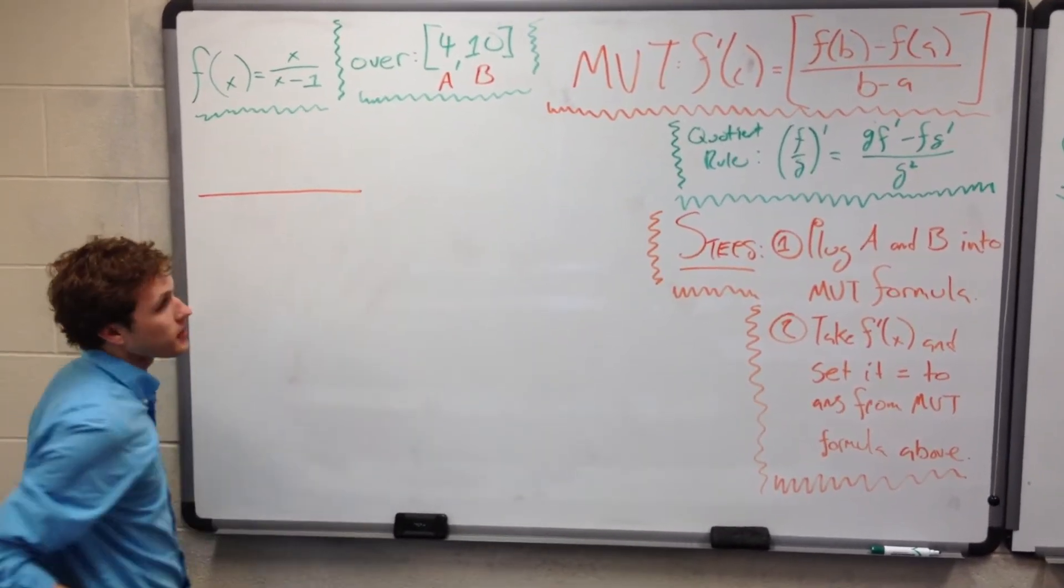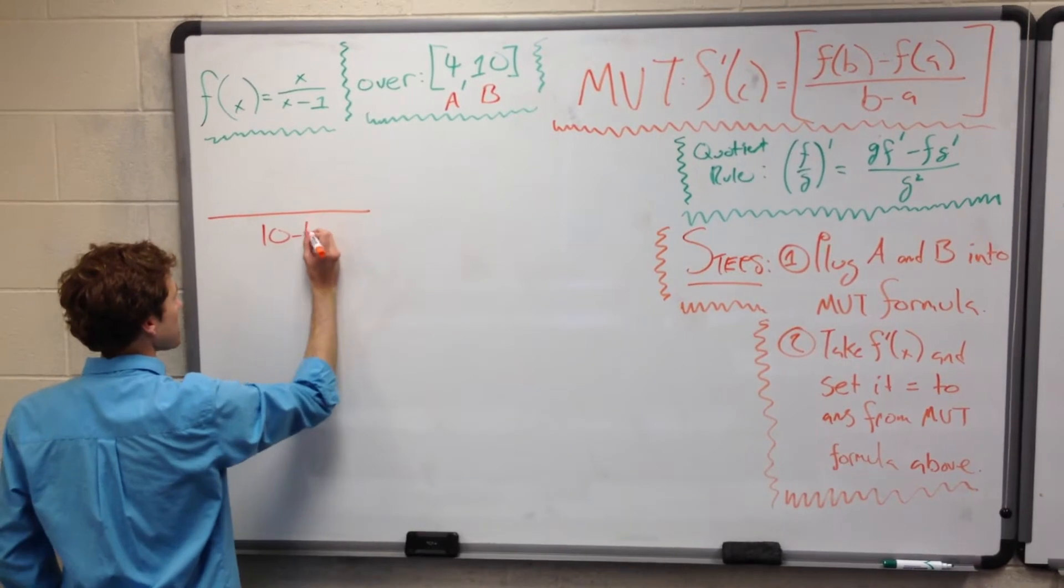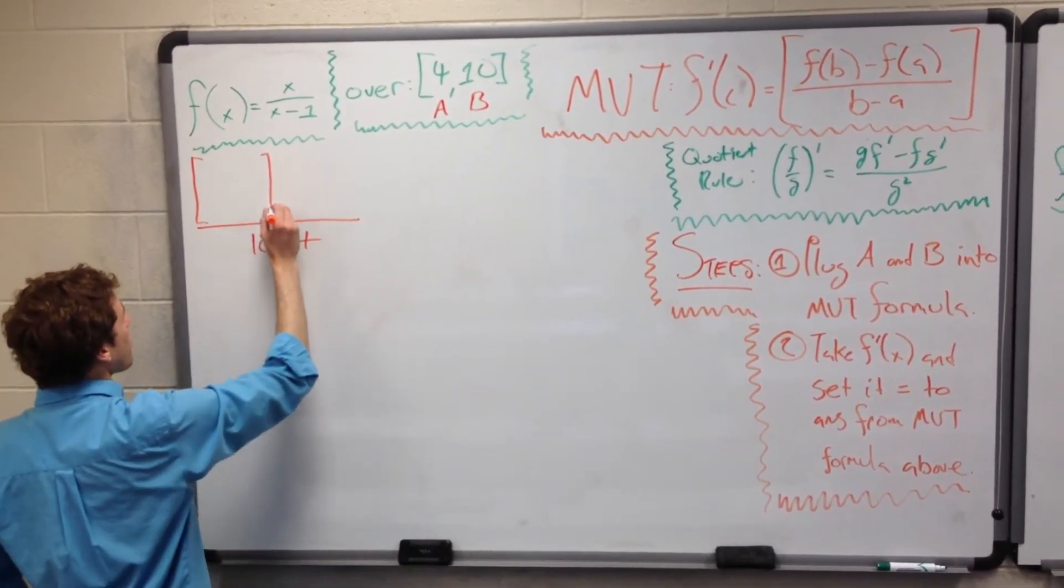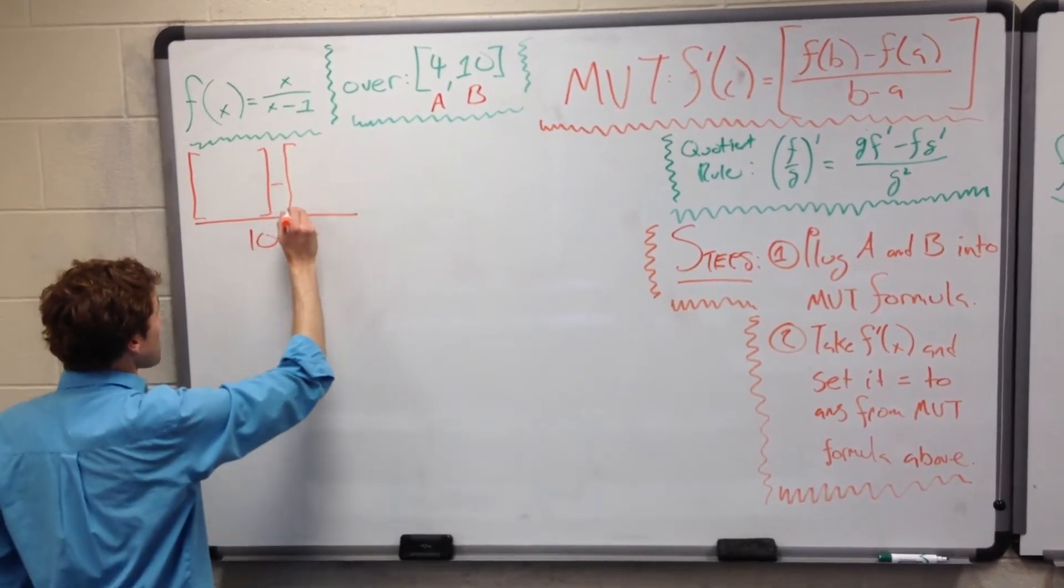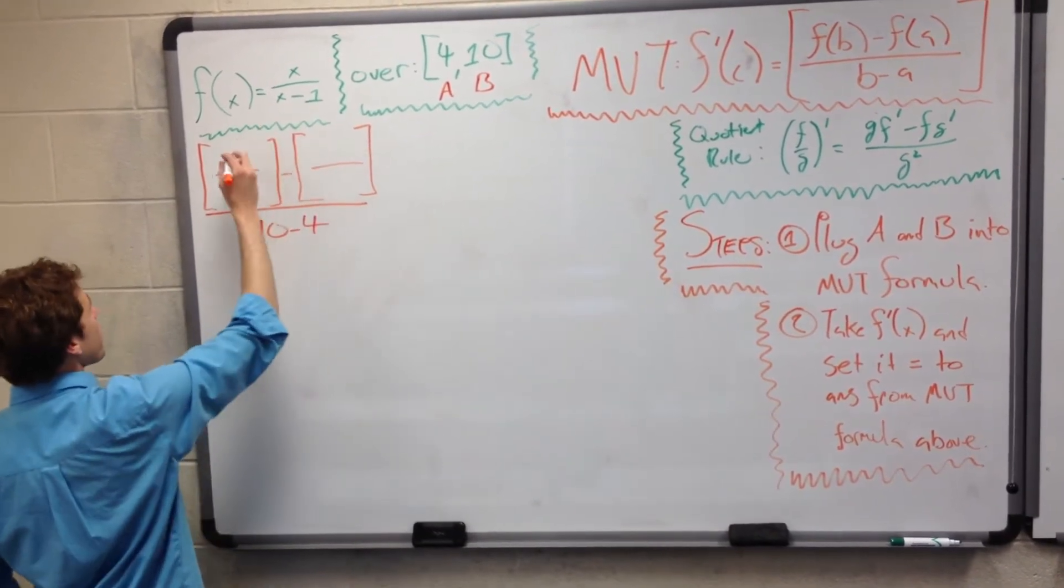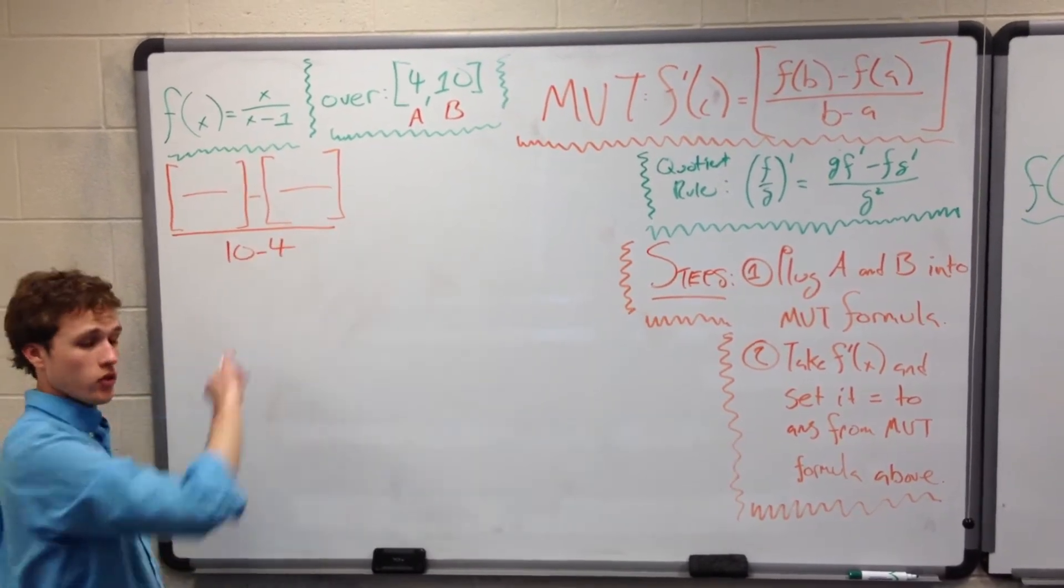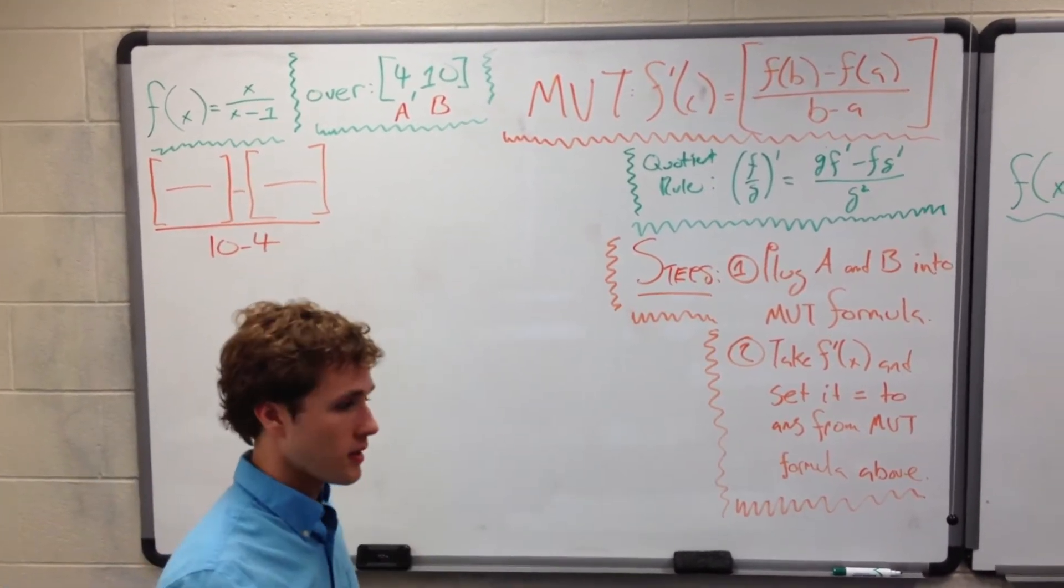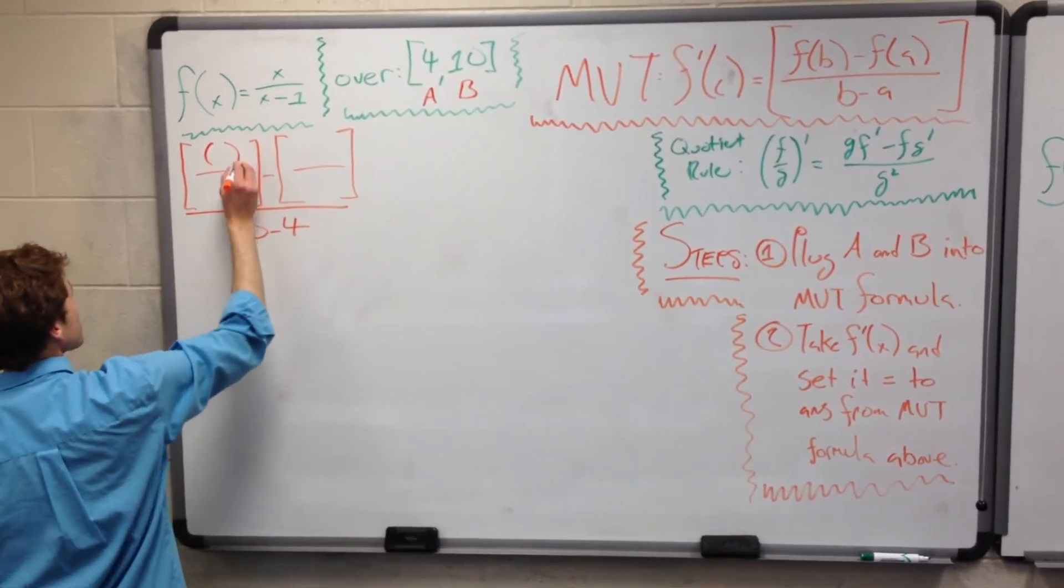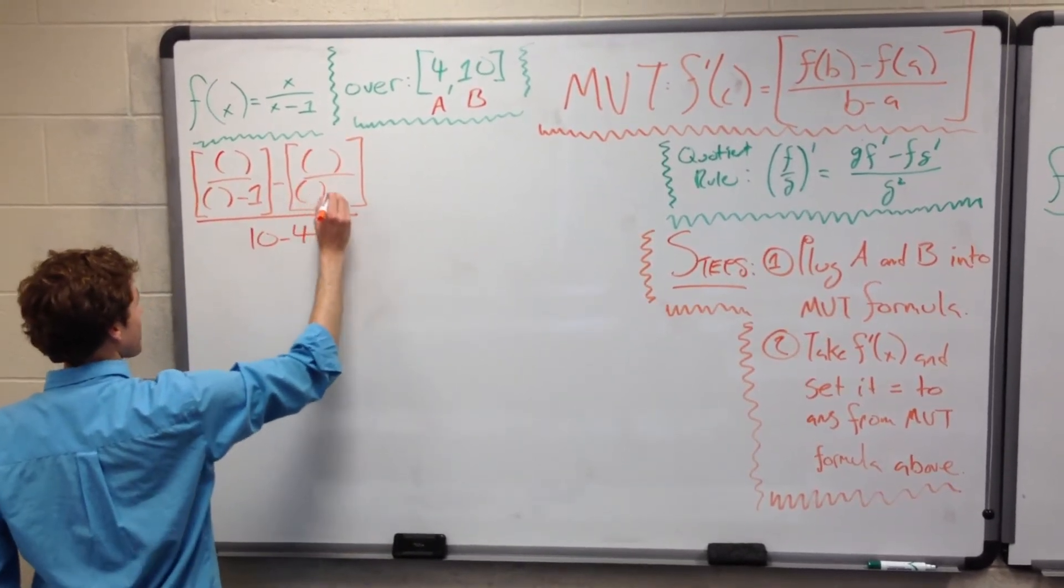So the denominator, b minus a, is easy enough. Our b is 10, our a is 4, so this is just 10 minus 4. On the top, things are going to get a little trickier, but it's going to look a whole lot worse than it actually is. We're going to have a quantity minus another quantity. Each quantity is a fraction. Now go ahead and just write in parentheses for all of your variables instead of trying to fill them in, because that will prevent mistakes.